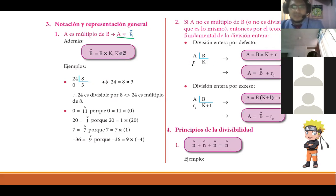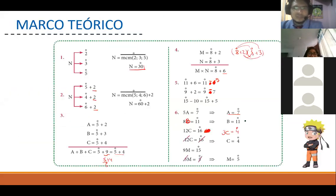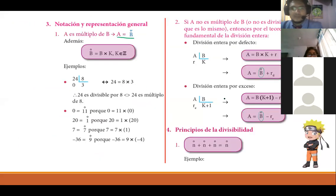Ahora, qué pasaría si tenemos residuos? Si tenemos residuos, tendríamos los dos tipos de división. La división por defecto y la división por exceso. Si tenemos la división por defecto, esta es la que normalmente hacemos. Vendría a ser B por K más R. Y la división por exceso vendría a ser B por K más 1 menos RE, que vendría a ser el residuo de exceso. Entonces diremos que A vendría a ser múltiplo de B más el residuo por defecto. Y A sería múltiplo de B menos el residuo por exceso. Eso lo podemos ver representado claramente acá en la propiedad 5. Residuo por defecto y residuo por exceso. Ahí está, con numeritos.